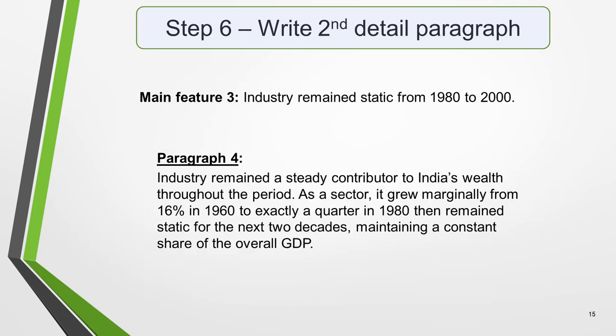For the fourth and final paragraph, you do the same thing for your remaining features. Here's an example of what we could write. Paragraph 4: 'Industry remains a steady contributor to India's wealth throughout the period. As a sector, it grew marginally from 16% in 1960 to exactly a quarter in 1980, then remained static for the next two decades, maintaining a constant share of the overall GDP.'